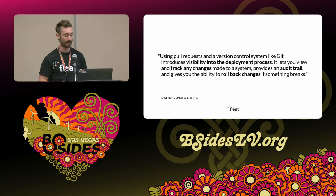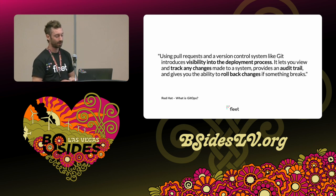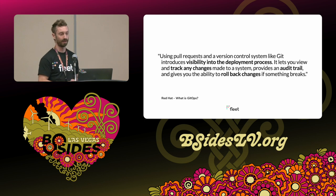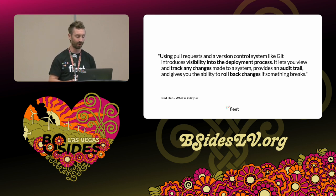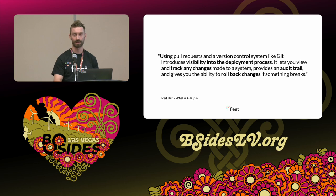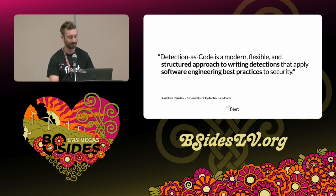What is GitOps? Using pull requests in a version control system like Git introduces visibility into the deployment process. It lets you view and track any changes made to a system, provides an audit trail, and gives you the ability to roll back changes if something breaks. That's from Red Hat.